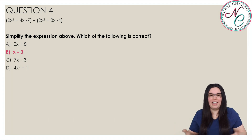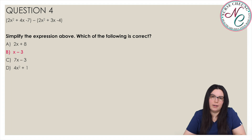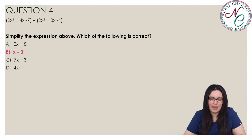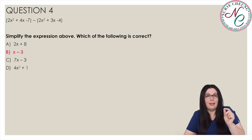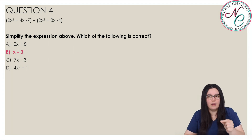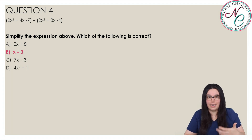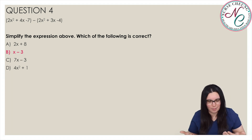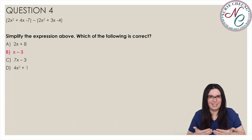To simplify this expression we have to combine like terms. 2x squared minus 2x squared cancels out to 0. Then 4x minus 3x is just x. Then negative 7 minus negative 4 — a minus and a negative equals a positive — so negative 7 plus 4 is negative 3. That gives us our final answer of x minus 3.